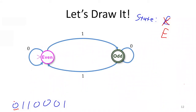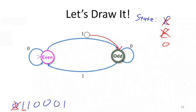Now we're in even and looking at a one as the next character. We follow the transition labeled one, so our state updates to odd. We can never read that character again. Next, we look at a one again — we're in odd, so when we see a one in the odd state, we move to the even state and update our state to even. We can't look at that character ever again.